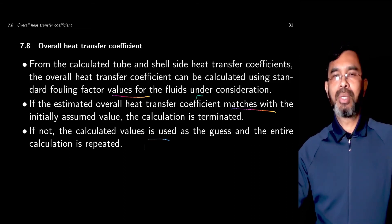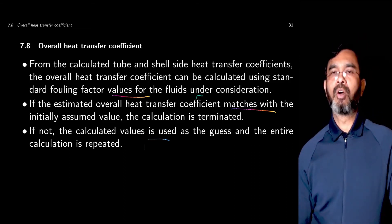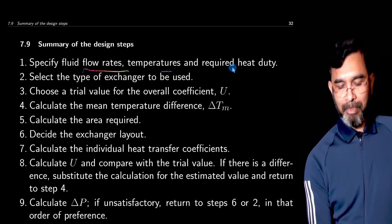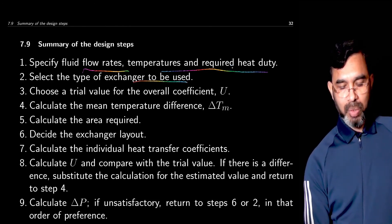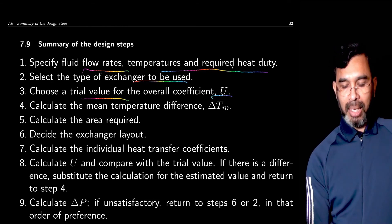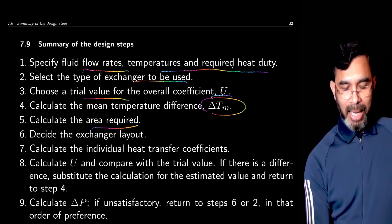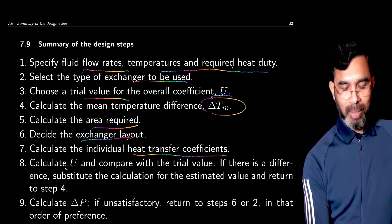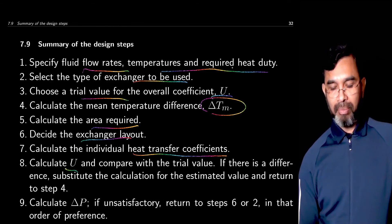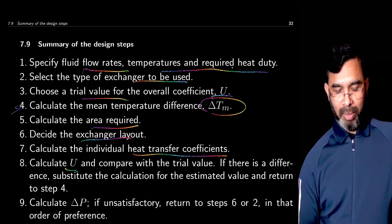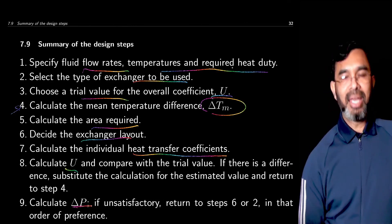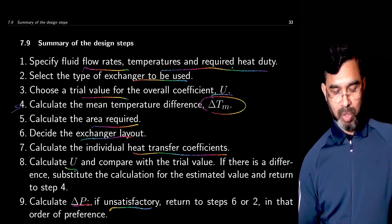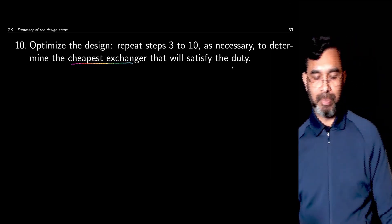We will look in detail at how to calculate the tube side, shell side, and overall heat transfer coefficients. The procedure for heat exchanger design is summarized as: specify fluid flow rates, temperatures, and required heat duty; select the type of heat exchanger and choose a trial value for the overall heat transfer coefficient; calculate the mean temperature difference to get the required area; decide on the exchanger layout and calculate individual heat transfer coefficients; calculate the overall heat transfer coefficient and compare with the trial value. If there is a difference, repeat the calculation. Once converged, also calculate the pressure drop delta P. If delta P does not meet process requirements, choose a different configuration and repeat. Finally, optimize the design from a cost perspective.